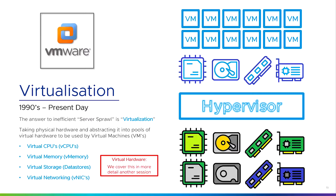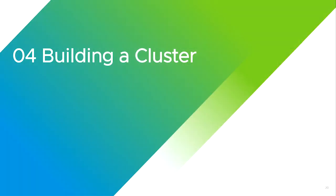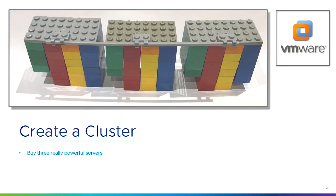Virtual hardware is covered in other videos. Typically if I was going to use virtualization, I'd build a cluster, starting with three servers. You can see there are lots of CPUs, RAM, storage, and networking joined together — that bar across the top means they're all in the same cluster. I buy three really powerful servers, install a hypervisor on them — something like vSphere ESXi — and group them together in a cluster.